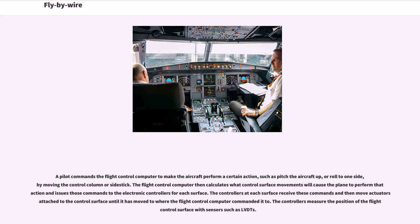The flight control computer then calculates what control surface movements will cause the plane to perform the action and issues those commands to the electronic controllers for each surface. The controllers at each surface receive these commands and then move actuators attached to the control surface until it has moved to where the flight control computer commanded it to. The controllers measure the position of the flight control surface with sensors such as LVDTs.